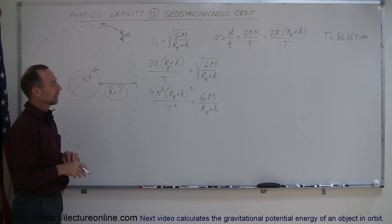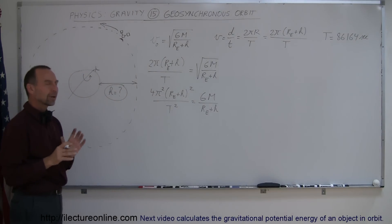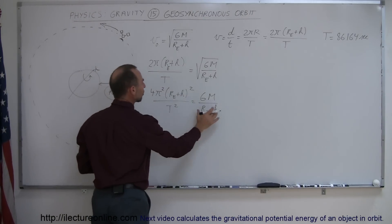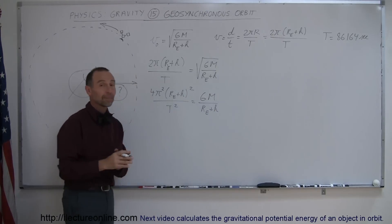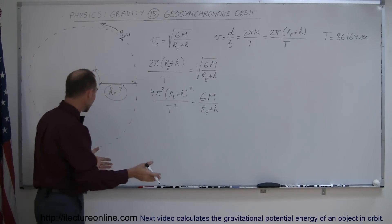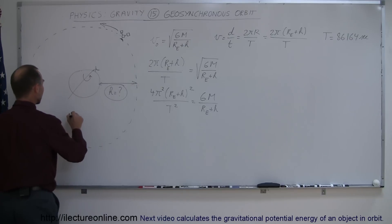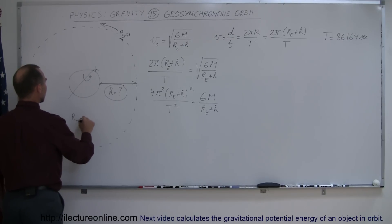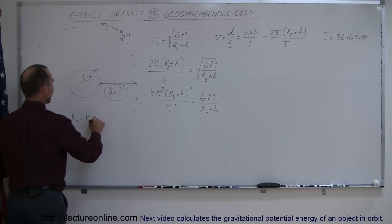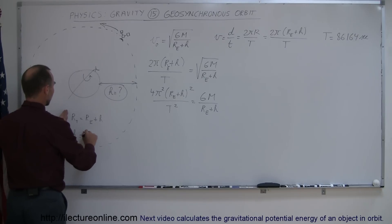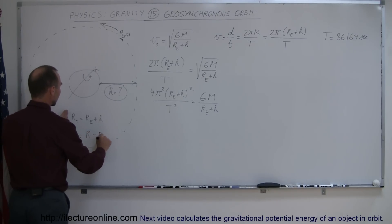Instead of solving directly for h, I'm going to replace (r_e + h) with simply r and solve for r. Then later I'll figure out h, because the total radius equals the radius of the earth plus h. So if I first solve for the total radius r, I can easily find h, since h equals the total radius minus the radius of the earth.